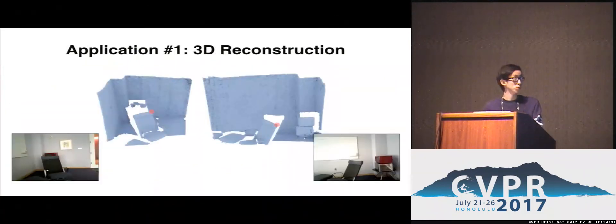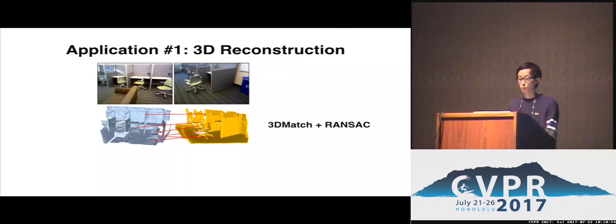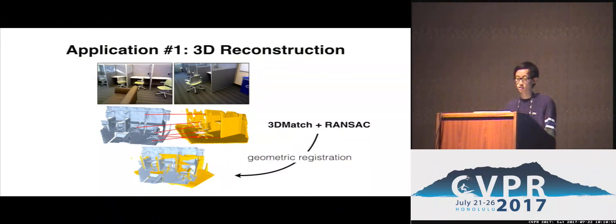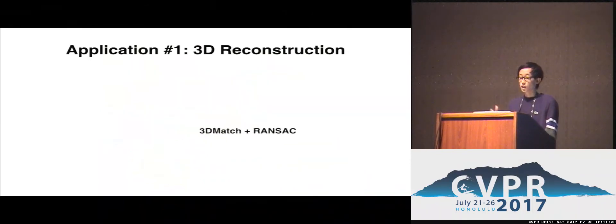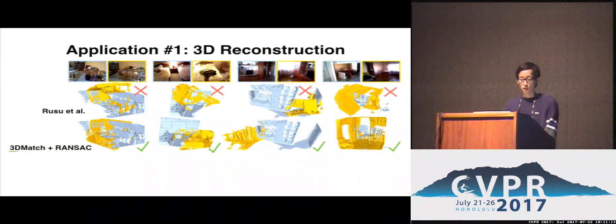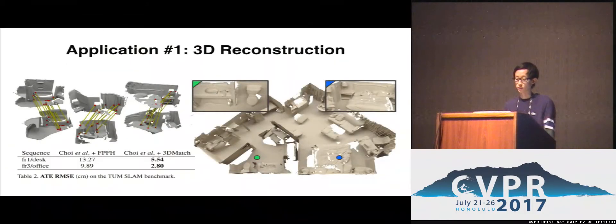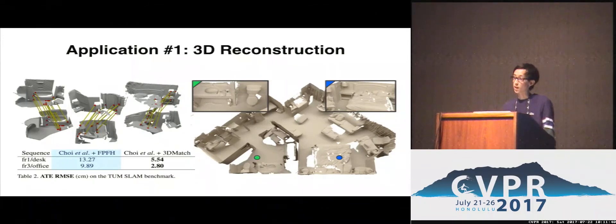For the first application, we show that 3D Match can improve reconstruction algorithms by robustly matching local 3D features on noisy depth scans of scenes the model has never seen before. By combining 3D Match with RANSAC, we can perform geometric registration to align 3D scans and detect challenging loop closures. In our experiments, 3D Match is not only better than other local 3D descriptors, but when combined with RANSAC, also outperforms many global geometric registration algorithms on standard benchmarks. Using correspondences from 3D Match with a simple bundle adjustment pipeline, we can produce globally consistent 3D reconstruction results and significantly reduce reconstruction error.